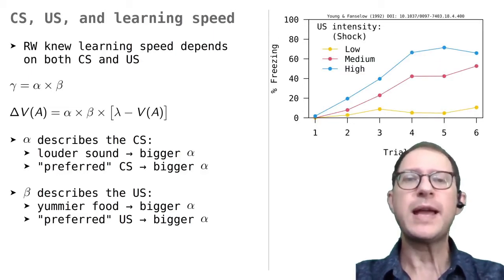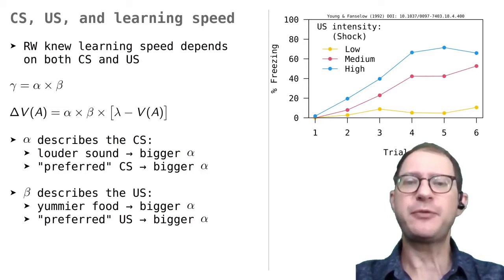For the US, beta works in the same way as alpha does for the CS. For example, this graph shows the results of another fear-conditioning study with rats, by Yang and Fancelot. Here, learning was measured by looking at whether the rats froze when hearing the CS. But here, the CS was always the same. What changed across groups was the intensity of the shock US. We can see that the rats that got larger shocks learn more quickly to be afraid of the CS.